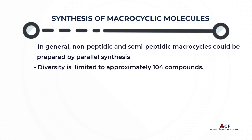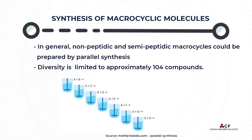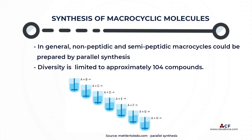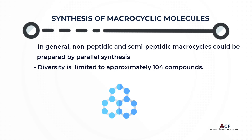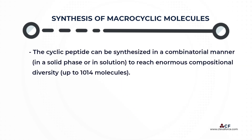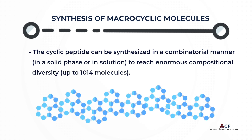In general, non-peptidic and semi-peptidic macrocycles could be prepared by parallel synthesis; however, their diversity is limited to approximately 10⁴ compounds. On the other hand, cyclic peptides can be synthesized in a combinatorial manner in solid phase or in solution, to reach enormous compositional diversity of up to 10¹⁴ molecules.